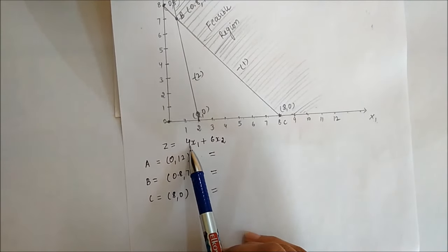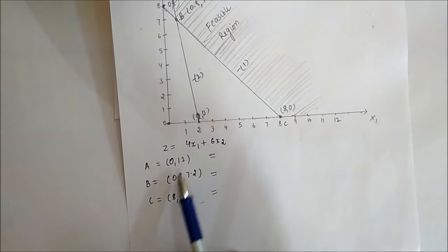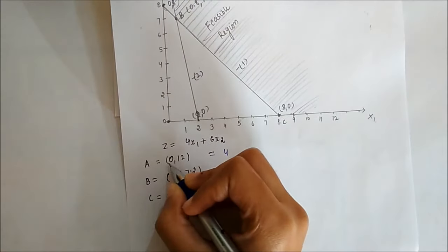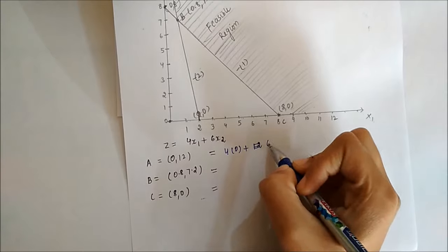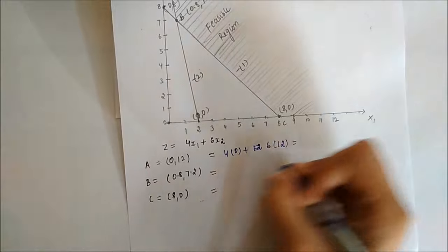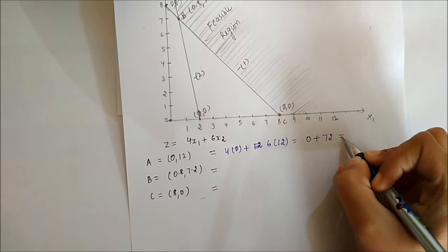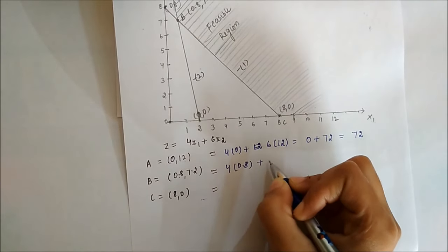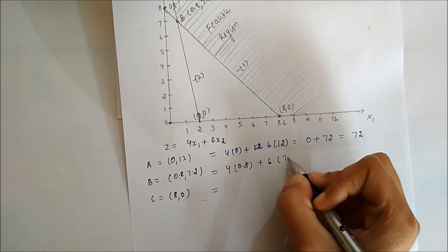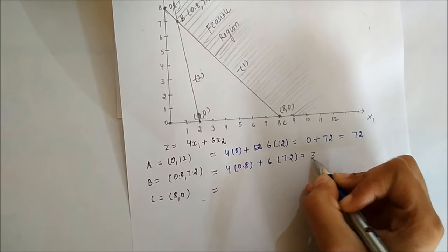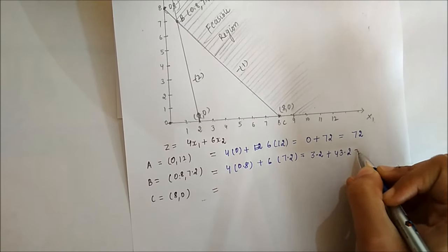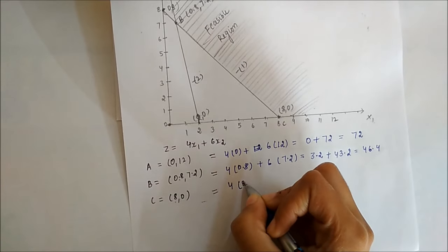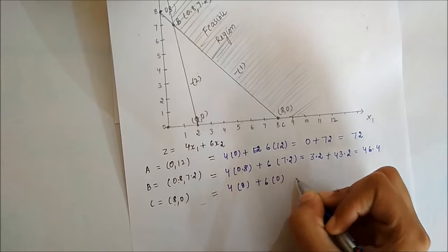Our objective is minimization of cost. The objective function is z equals 4x1 plus 6x2. We evaluate at each corner point. At point a (0, 12): z equals 4×0 plus 6×12 equals 0 plus 72 equals 72. At point b (0.8, 7.2): z equals 4×0.8 plus 6×7.2 equals 3.2 plus 43.2 equals 46.4. At point c (8, 0): z equals 4×8 plus 6×0 equals 32.